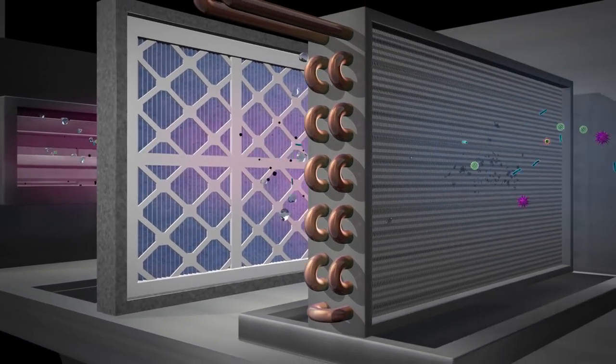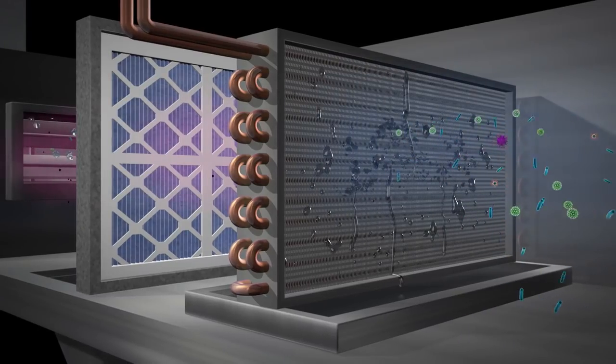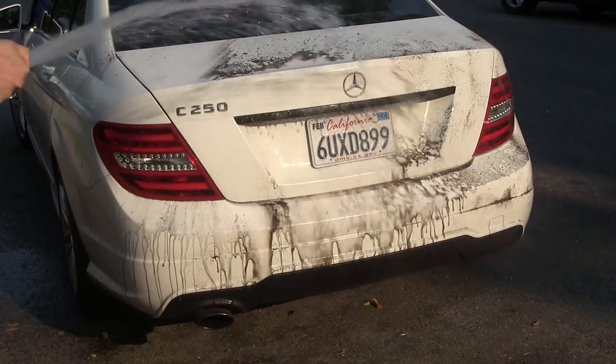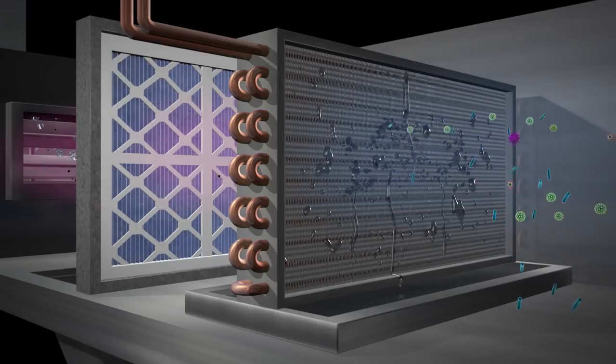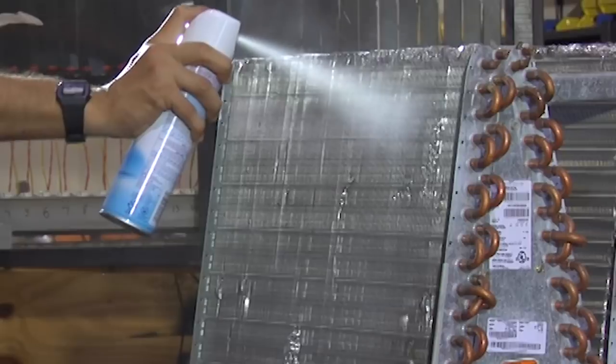We should expect the condensate that is produced when warm air meets the cold coil to wash the particulates down into the drain pan as easily as one washes mud off a car. But the dust stays on the coil and often requires harmful chemicals to remove it.